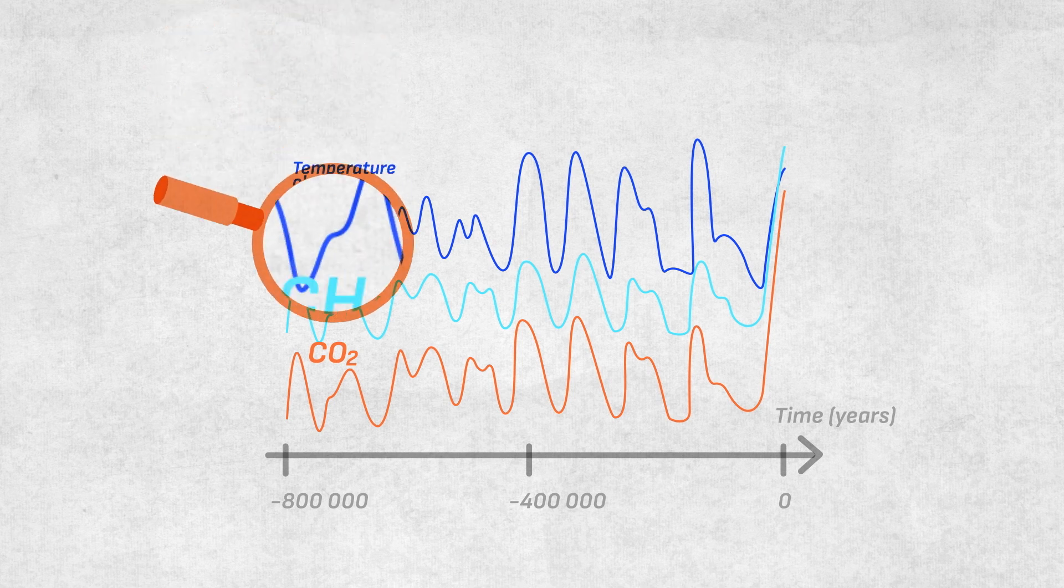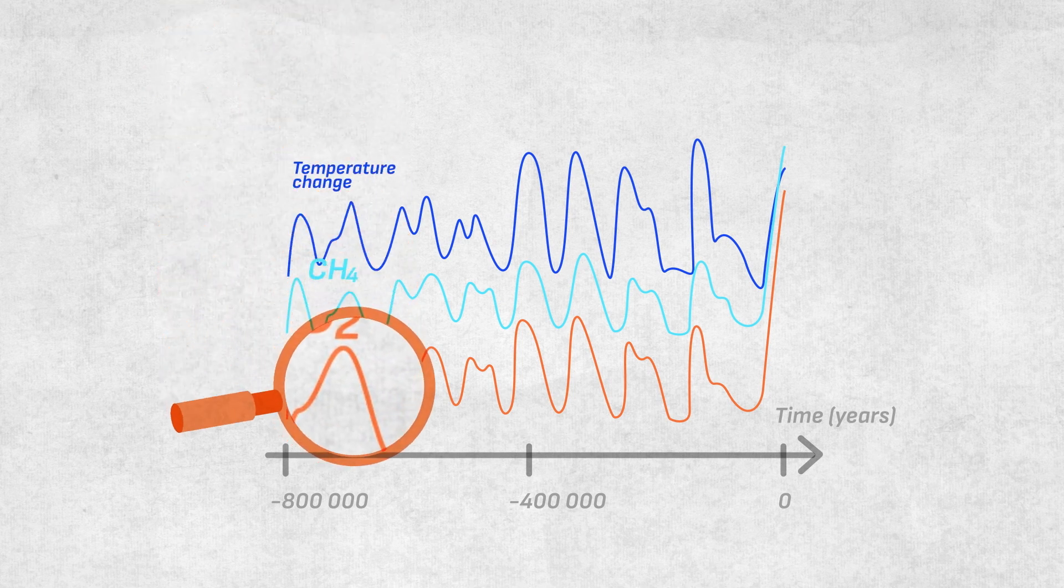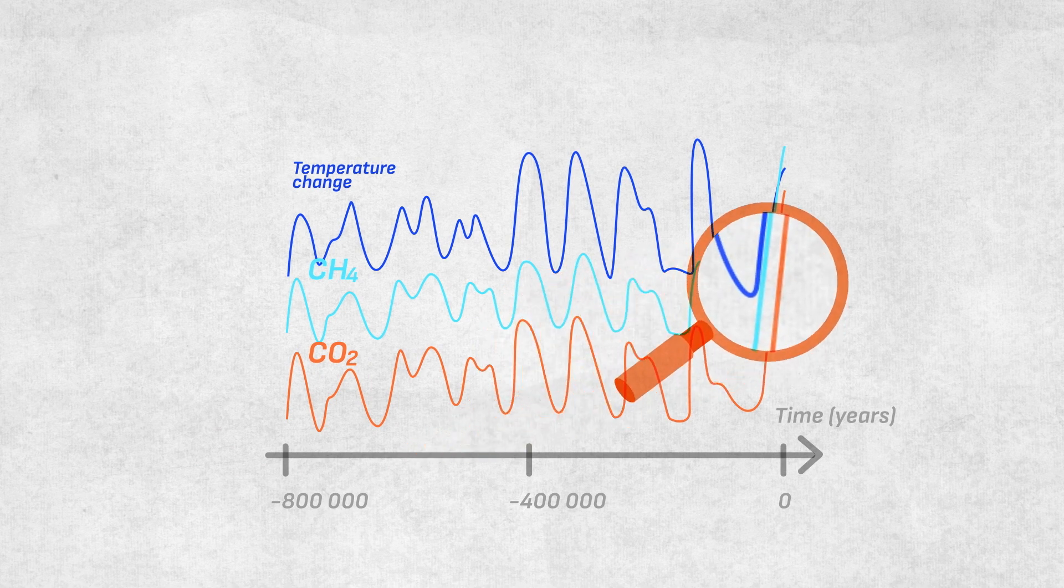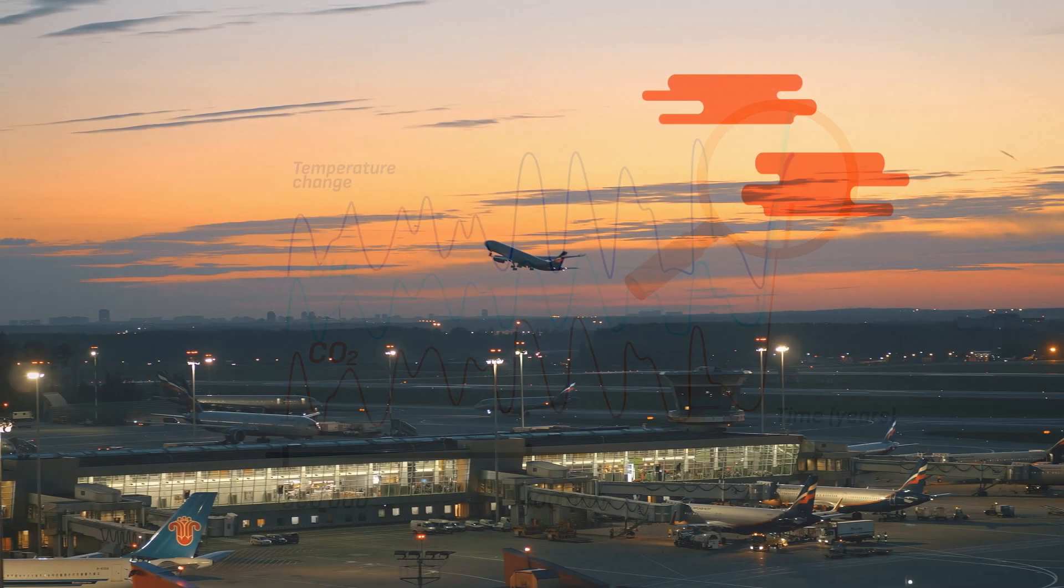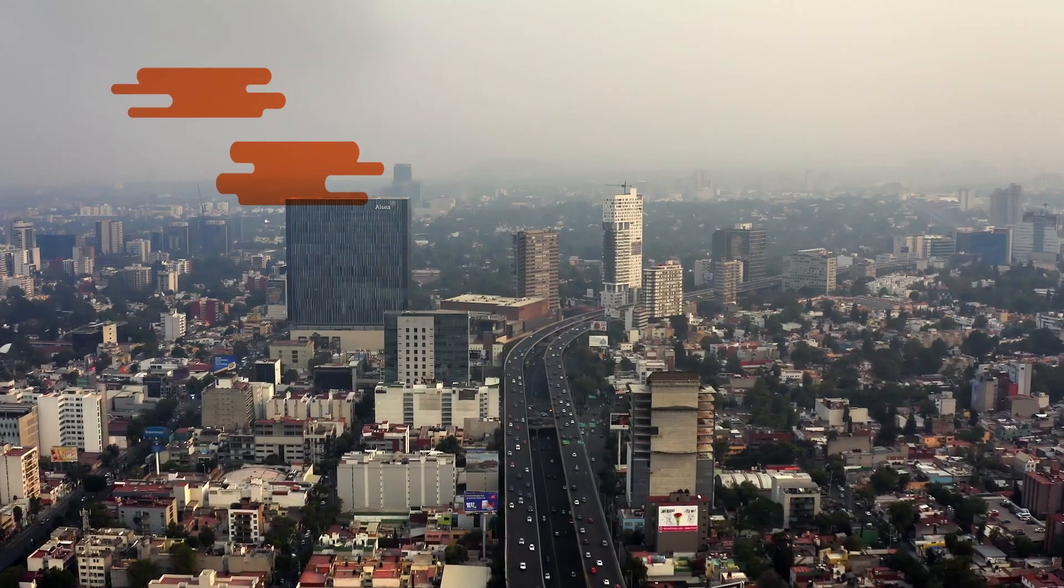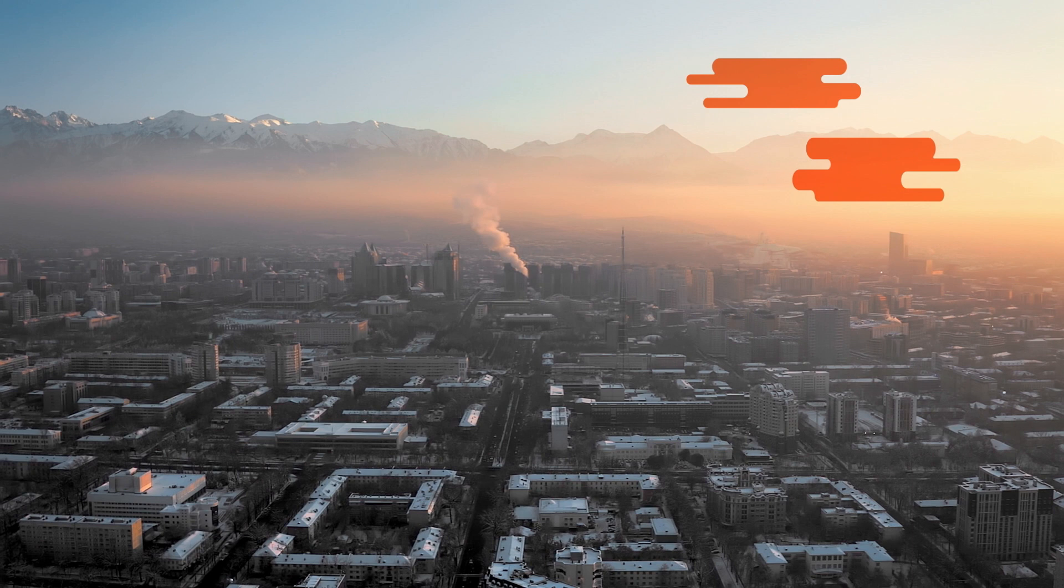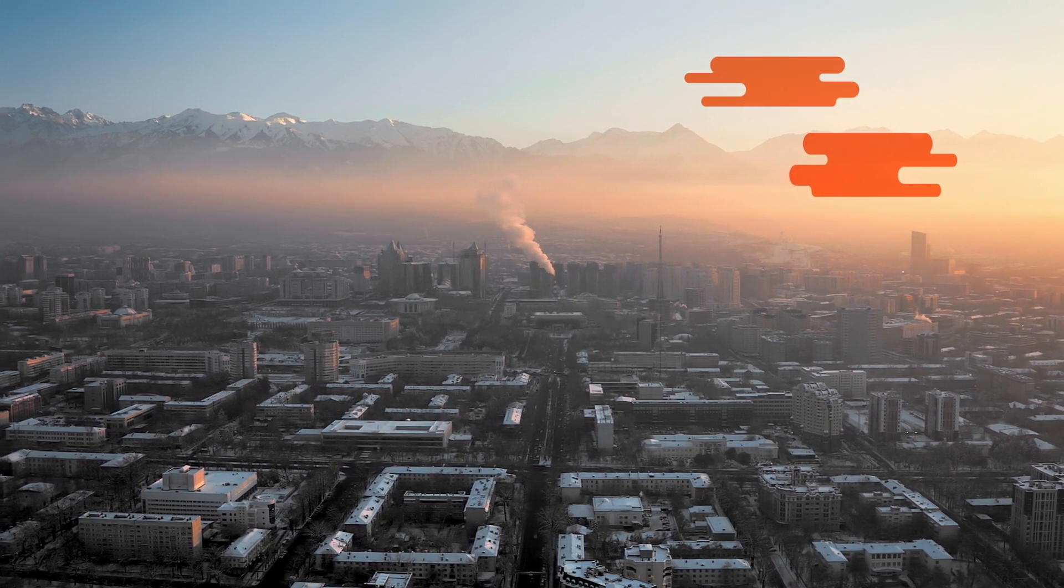Secondly, the atmospheric greenhouse gas concentrations over the last 800,000 years have never been as high as they are today. And human activities have been responsible for the increase of atmospheric greenhouse gas concentration observed over the past 150 years.